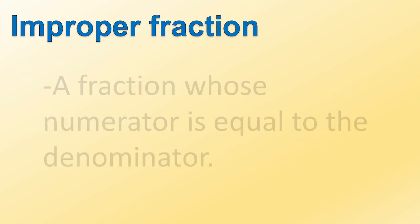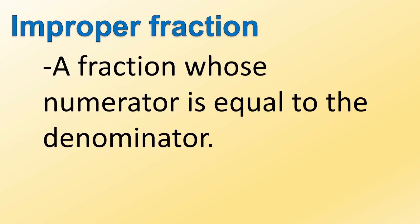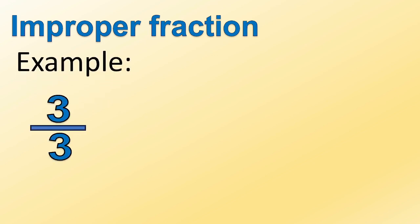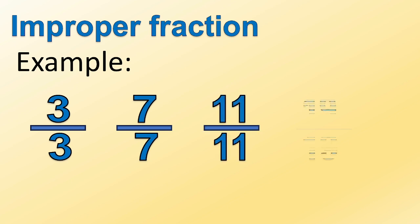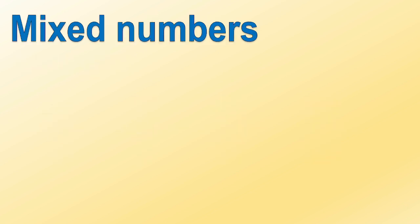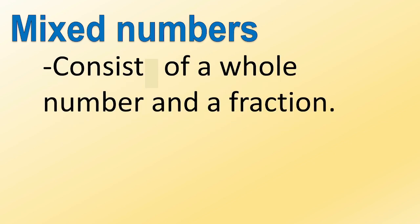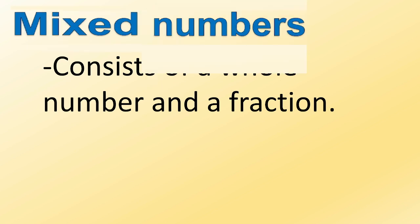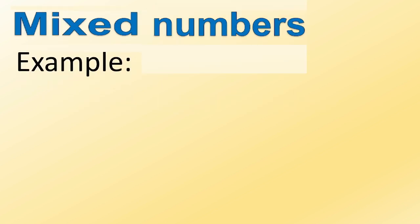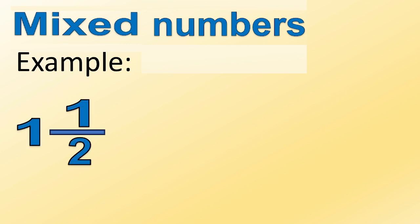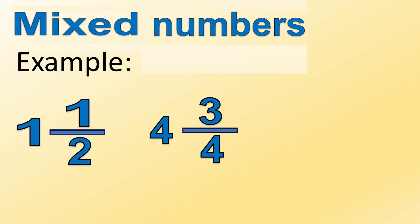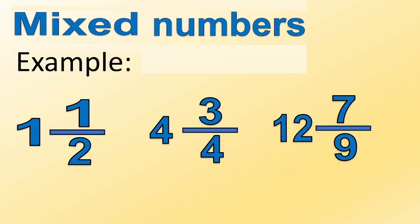An improper fraction is also a fraction whose numerator is equal to the denominator. For example: three-thirds, seven-sevenths, eleven-elevenths, nineteen-nineteenths. How about mixed numbers? Mixed numbers consist of a whole number and a fraction. For example: one and one-half, four and three-fourths, twelve and seven-ninths.